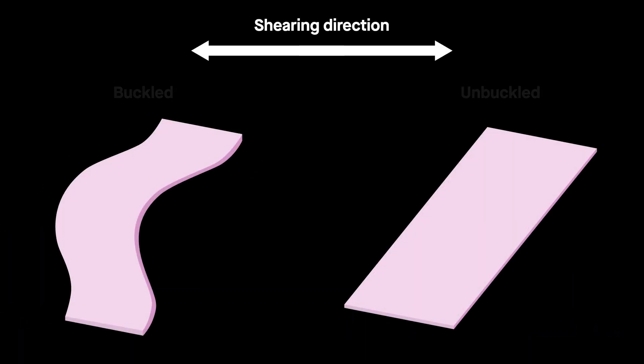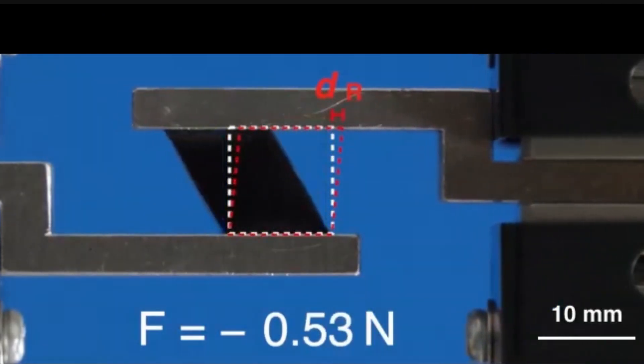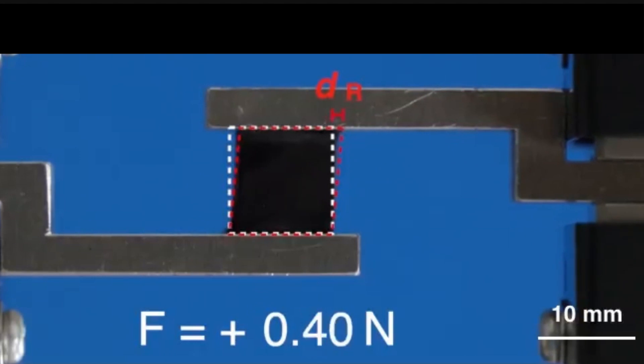Pushing down on the sheets with enough force causes them to crumple or buckle, like a pillar carrying too much weight. By arranging these sheets at an angle inside the hydrogel, shearing along the buckling direction creates more deformation than shearing along the opposite direction.